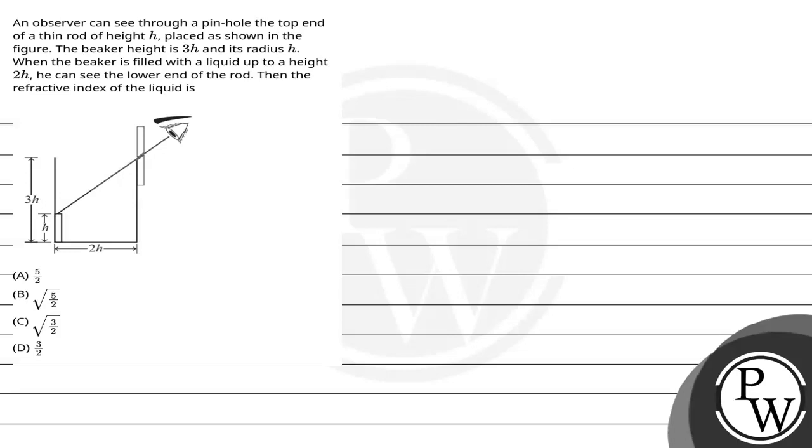Hello Bacho, let's read this question. The question says an observer can see through a pink bowl the top end of a thin rod of height h placed as shown in the figure. The beaker height is 3h and its radius h. When the beaker is filled with a liquid up to a height 2h then he can see the lower end of the rod. Find the refractive index of the liquid.